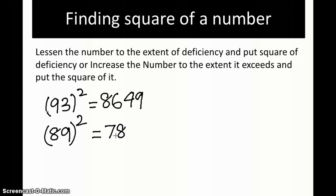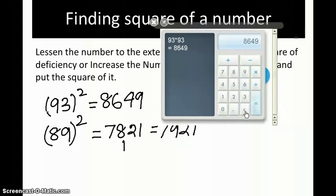The deficiency is 11, so 11 squared is 121. We can only accommodate two numbers here, so we write 21 here and 1 here. The answer is 7921. Let's check: 89 times 89 equals 7921.